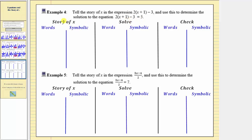We'll first tell the story of x by starting with x and building the given equation. Beginning with x, notice how in the parentheses we have x plus one, so the first step in the story is to add one to x, which gives us the expression x plus one. And because we have two times the quantity x plus one, the next step in the story is to multiply by two, which gives us two times the quantity x plus one.